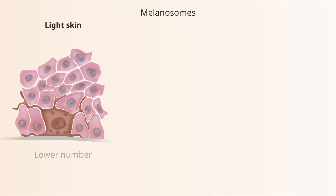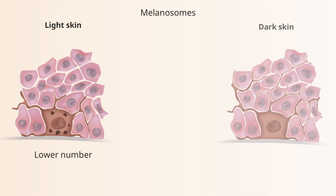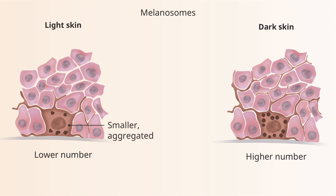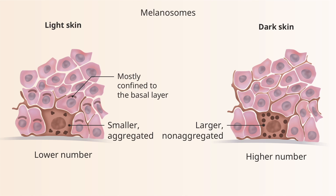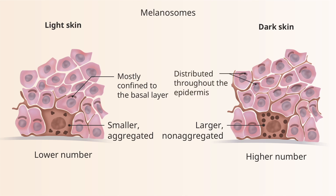In light skin, there is a lower number of melanosomes, which are smaller and aggregated, mostly confined to the basal layer, with a faster degradation rate. In dark skin, there is a higher number of melanosomes, which are larger and non-aggregated, distributed throughout the epidermis, as seen in the picture, with a lower degradation rate.